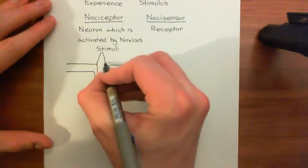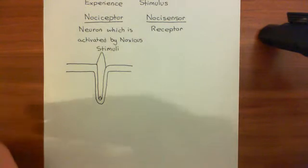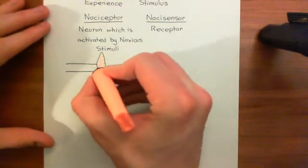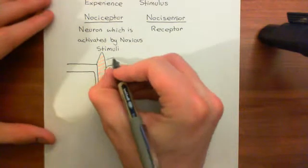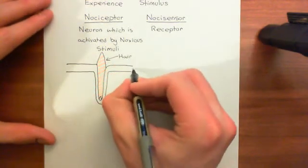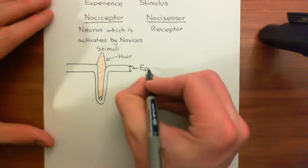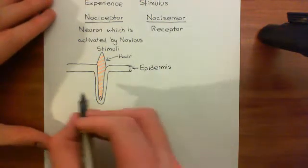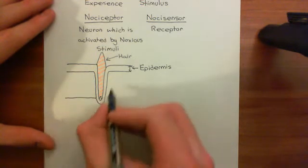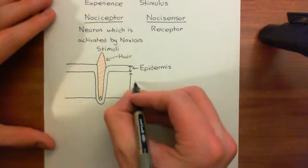Sitting in there, what we're going to have is a hair. Here is our hair sitting within its hair follicle. The epidermis is this outermost layer. We won't go into the details of looking at the different layers of the epidermis — we'll just summarise it all as one here. So this is the epidermis. Underneath the epidermis, you have the dermis, which is the next layer down. So this now represents the dermis.